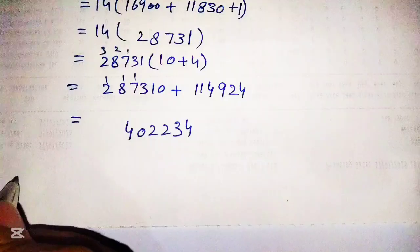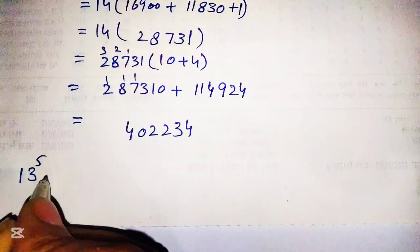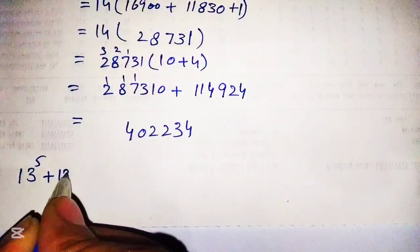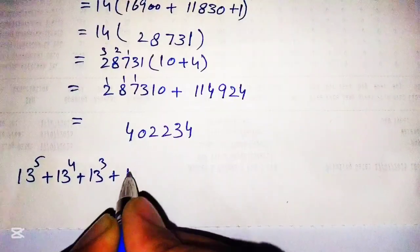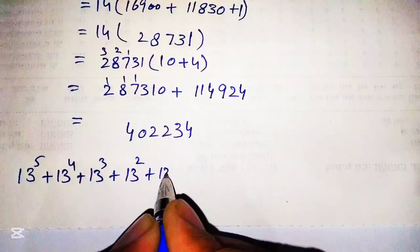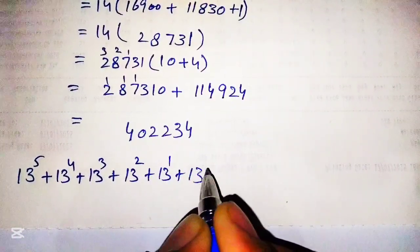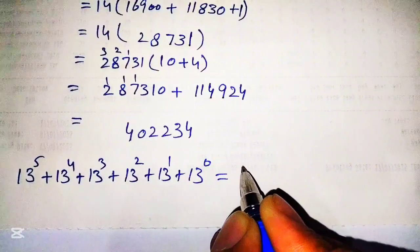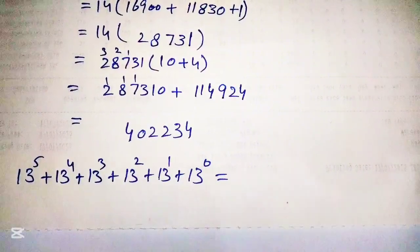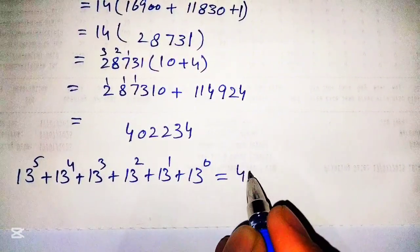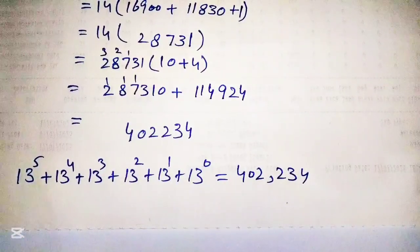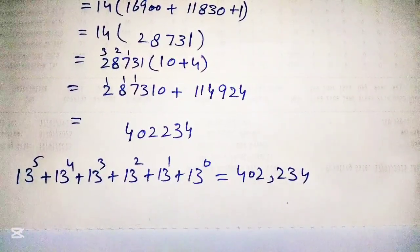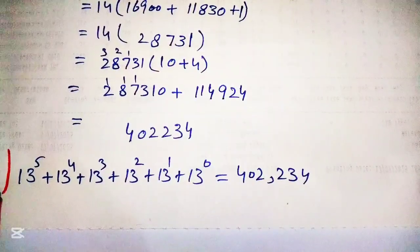Hence, the given expression 13 raised to power 5 plus 13 raised to power 4 plus 13 raised to power 3 plus 13 raised to power 2 plus 13 raised to power 1 plus 13 raised to power 0 is equal to 402,234. This is our final answer, and we concluded this value without using a calculator.